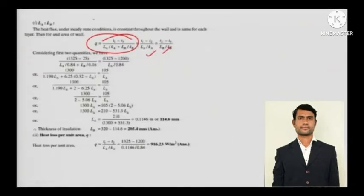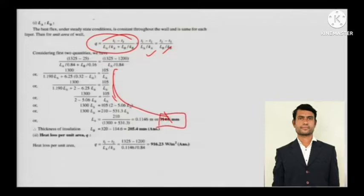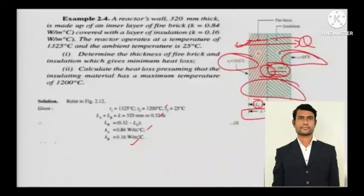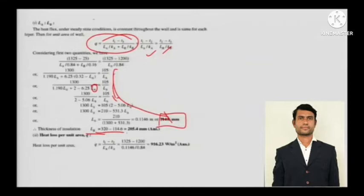Considering the first two quantities, you can calculate LA throughout. LA — the thickness of the firebrick — is unknown, but everything else is known, so you can calculate LA with a little bit of mathematics. The thickness of the insulation LB will then be 320 mm minus LA.